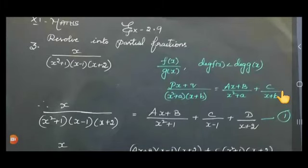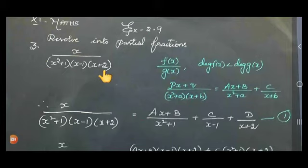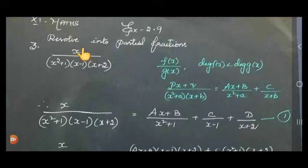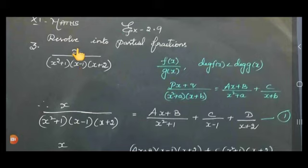Now let us see exercise 2.9, resolve into partial fractions. The third sum is x divided by (x² + 1)(x - 1)(x + 2). This is of the form f(x) / g(x). The numerator has degree — comparing, the denominator will be degree 4, since x² times x times x gives x⁴. So degree of f(x) is less than degree of g(x).